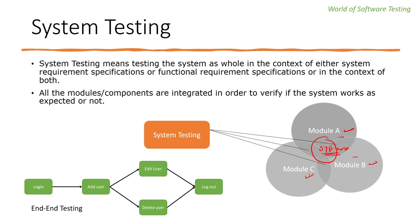This is the key difference between system testing and integration testing. System testing plays an important role in delivering a high quality product. It is performed by a testing team independent of the development team, which helps test the quality of the system impartially. It includes both functional and non-functional testing, and is a black box testing approach. It is performed after integration testing and before acceptance testing.